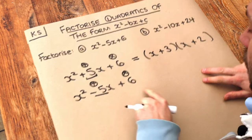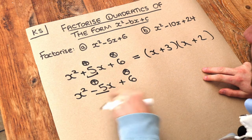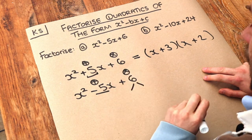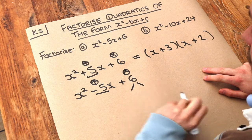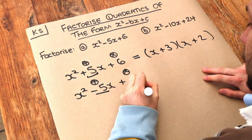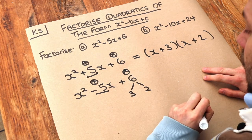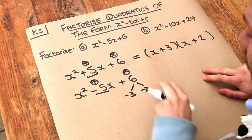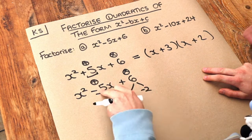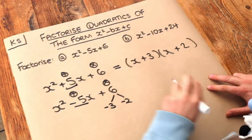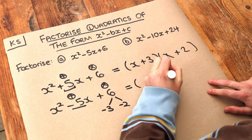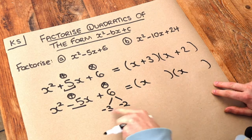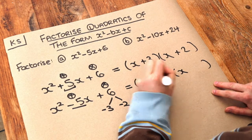So let's think of numbers which multiply to give 6 and add to give minus 5. We could just write out the factor pairs. What numbers multiply to give 6? Well, it could be 3 and 2. And if they were both negative like this, they would still multiply to give 6, and they do indeed add to give minus 5. So we have two brackets, x at the start of each, and then our two numbers are minus 3 and minus 2, either way round.